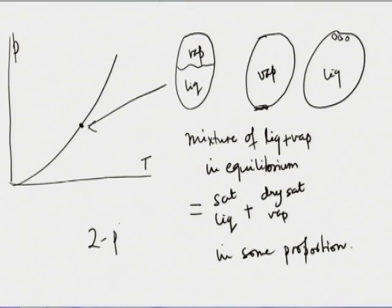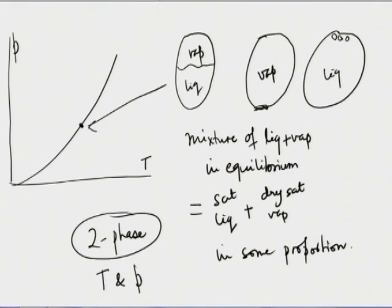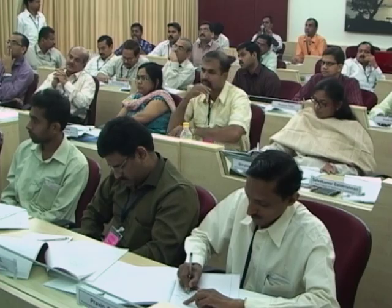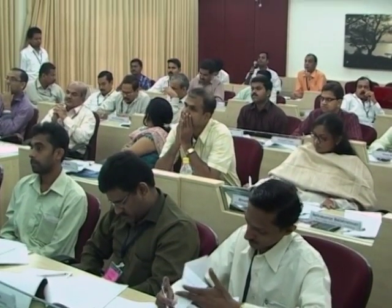Since it is a two-phase situation, P and T together are not a full or proper combination. If there is only liquid, it has the saturated liquid property as listed in the table. If there is only vapour or just a negligible trace of liquid, it is dry saturated vapour. Because two phases coexist, phase rule dictates that pressure and temperature are not independent — that is why we have the saturation line.